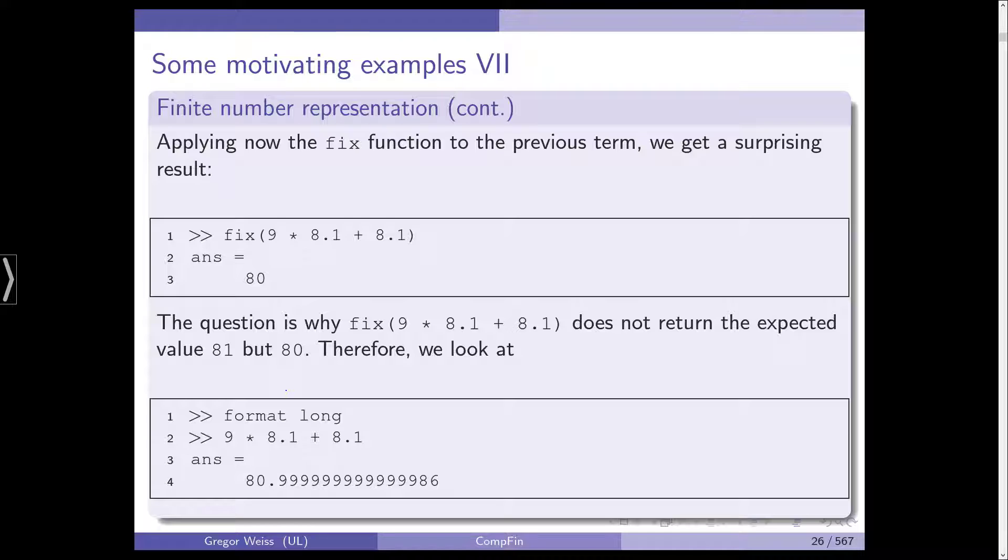Now, we apply this to our previous term, and we get a rather surprising result. 9 times 8.1 plus 8.1 gives us, if we round it down, 80. We were looking for 81.